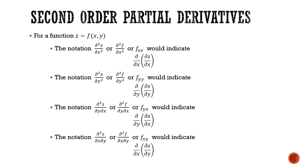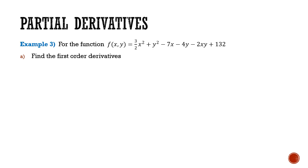Let's do a few of these derivatives to illustrate how this is applied. Here we have the function f(x,y) = (3/2)x² + y² − 7x − 4y − 2xy + 132. We'll ultimately get the second order derivatives, but first we need the first order derivatives.